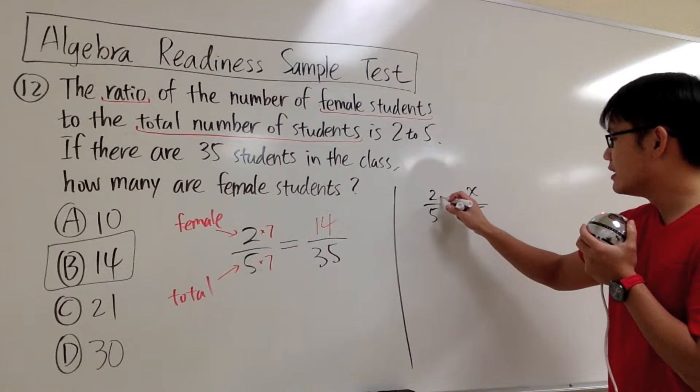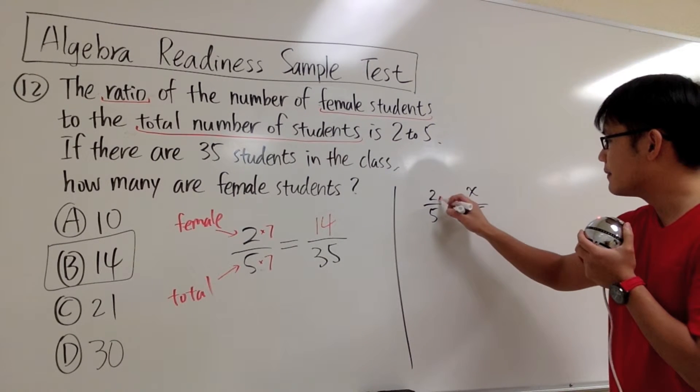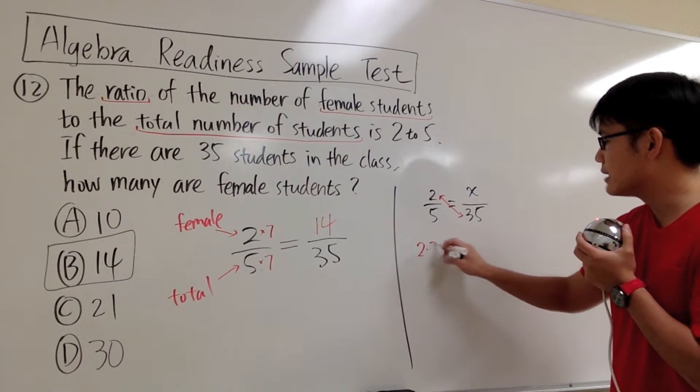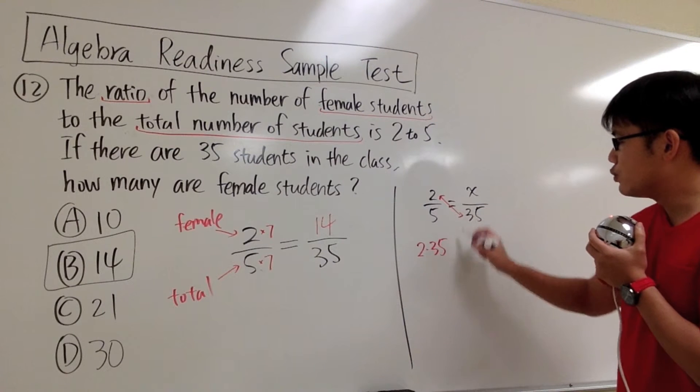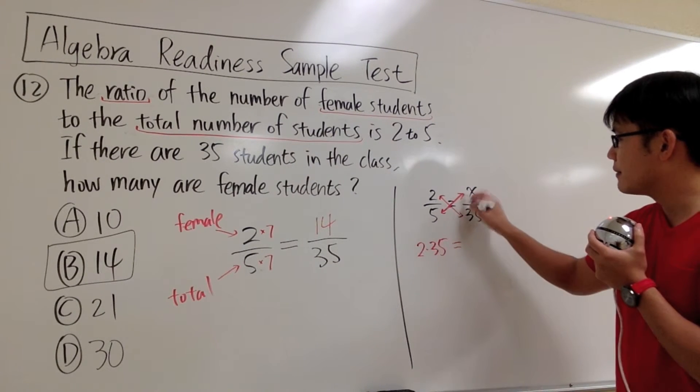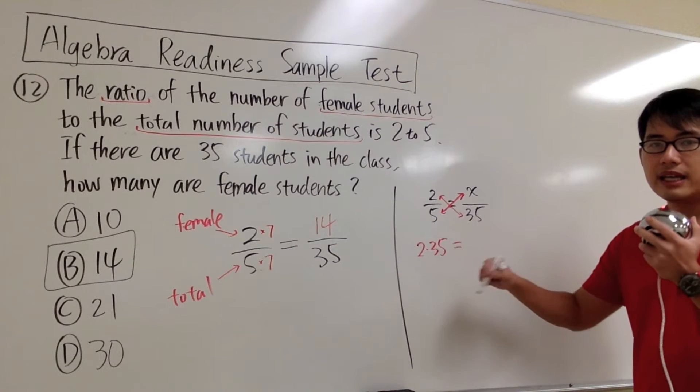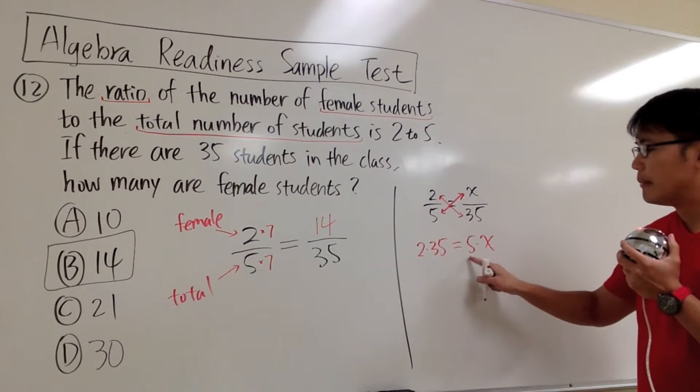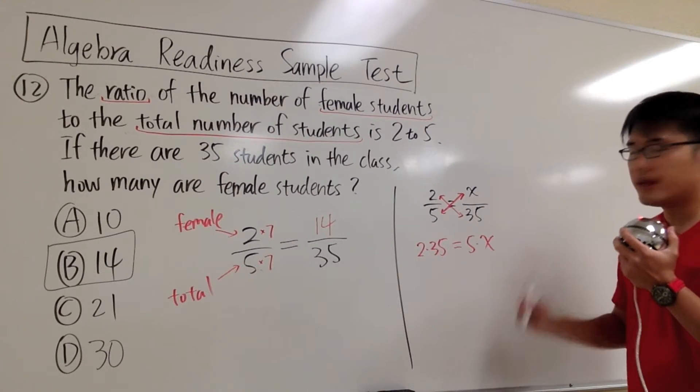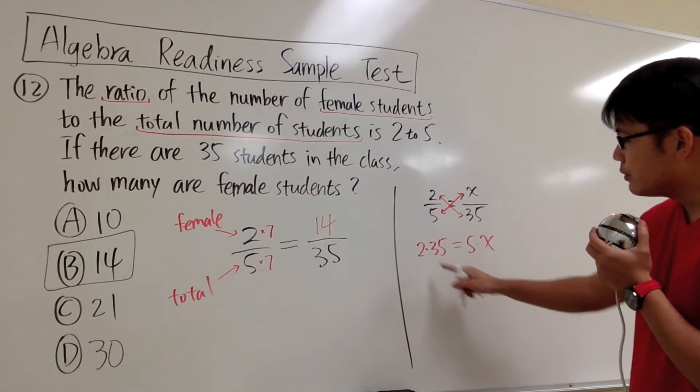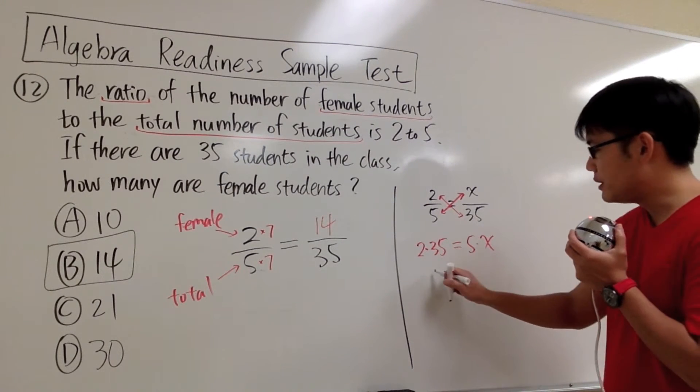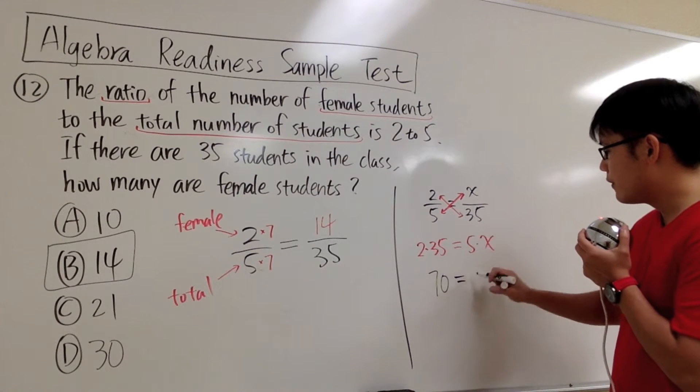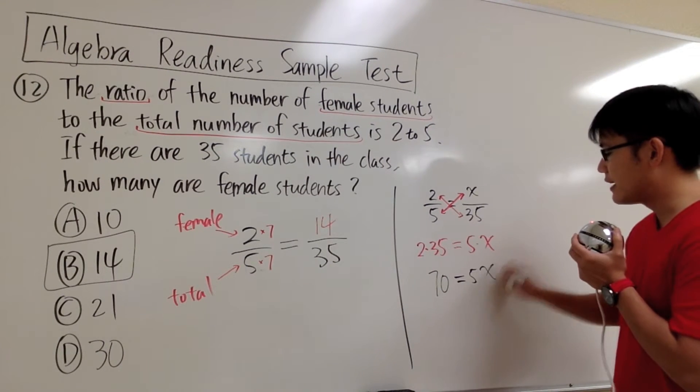Let me demonstrate. We'll do 2 times 35. Let me write it down. 2 times 35, and this will equal x times 5. x times 5, usually we like to write it down 5 times x. Number goes first before variable. I'm just going to work this out for you. 2 times 35, that will be 70. And this equals 5 times x, so that's 5x.